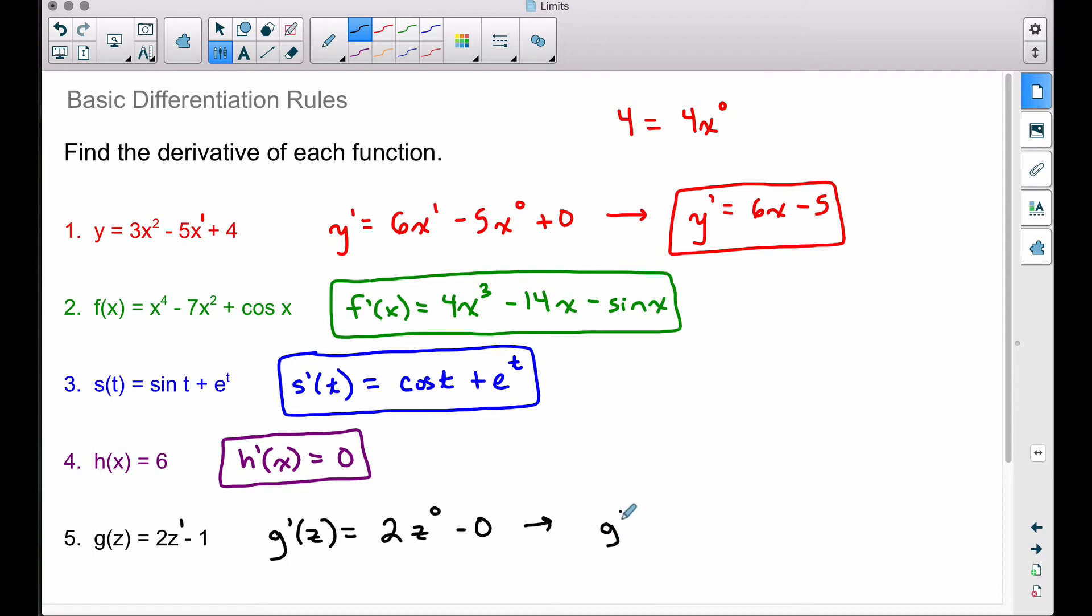Cleaning this up, we get g prime of z is simply equal to two. Because two times one, that's a one right there. Two times one is two, minus zero, we still get two.